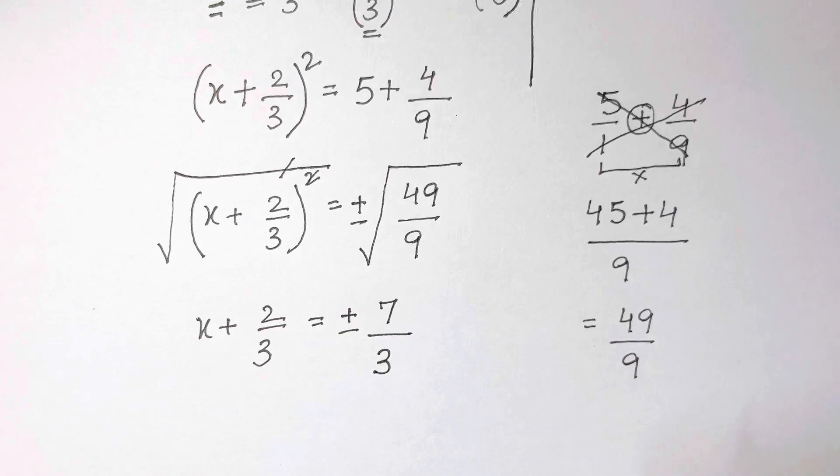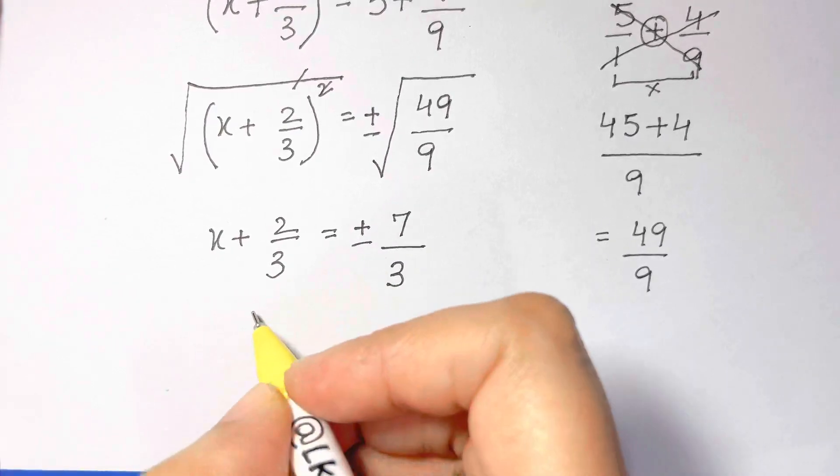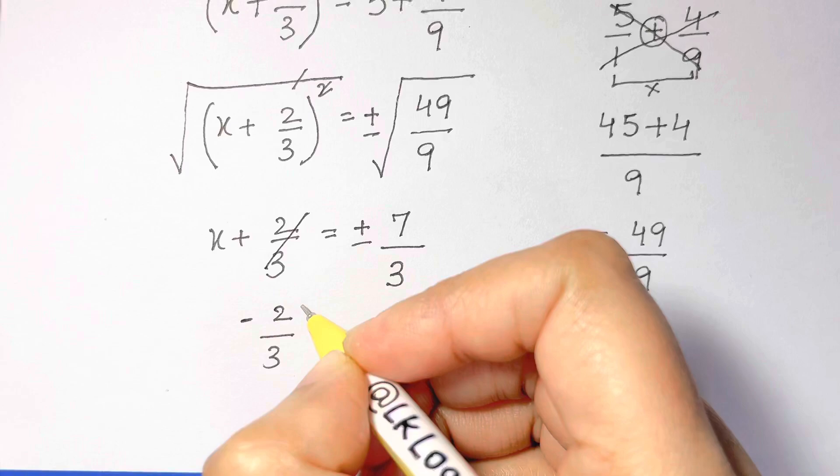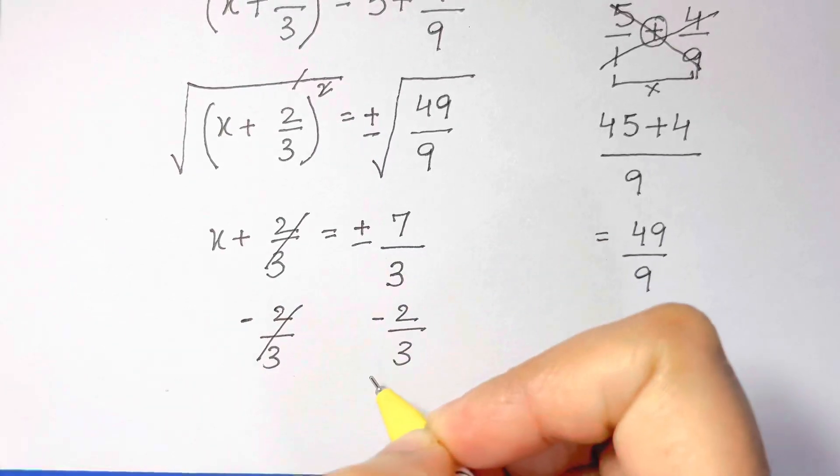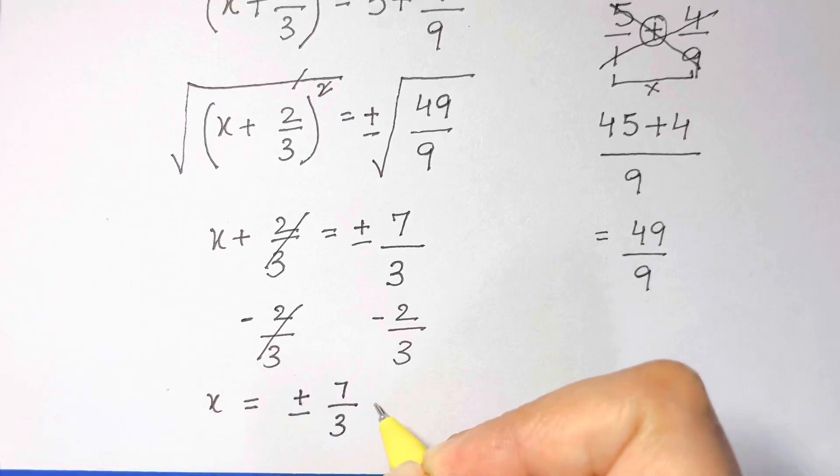Now I want to isolate x, so I am going to subtract 2/3 on both sides. What happens next is the whole thing cancels out, so we get x = ±7/3 - 2/3.